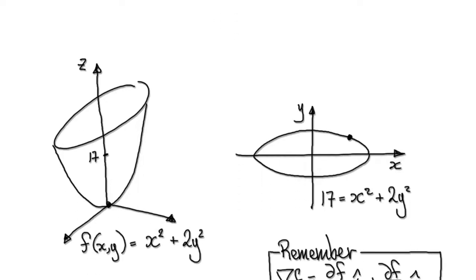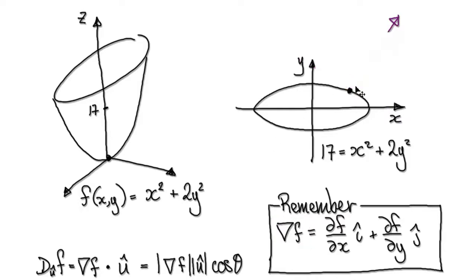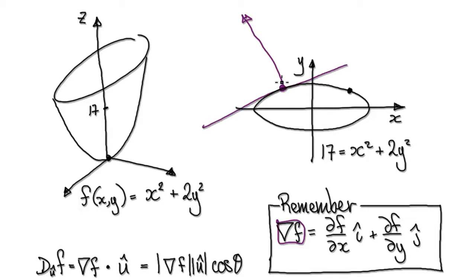I'm going to attempt to explain why the gradient vector is always at 90 degrees to the tangent. The gradient vector looks something like this. Suppose the particle is here instead — the gradient vector looks something like this, and the tangent looks something like this. It's always at 90 degrees.